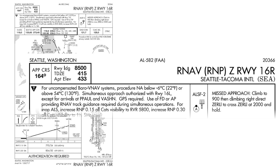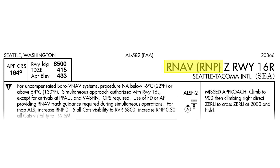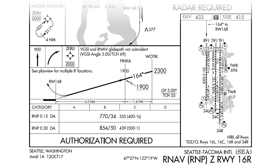But using RNP in an approach title presents another problem, at least for pilots using procedures published by the FAA. Here's the chart for an RNAV approach at Seattle-Tacoma International Airport. Notice that the title of this procedure is RNAV RNP Zulu Runway 16R. In the US, the letters RNP in the title mean the procedure is something special — it isn't for general use. As an all-caps note at the bottom of the chart declares, this approach is an AUTHORIZATION REQUIRED, or AR, procedure. It's like a CAT-2 or CAT-3 ILS.